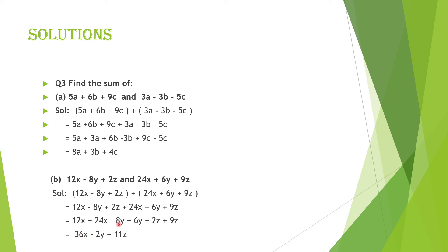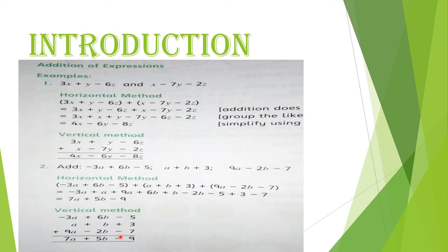Minus 8y aur plus 6y: 8 bada hai, 6 chota — 8 mein se 6 nikaalen: minus 2y. Phir 2z aur plus 9z: 9 plus 2 equal to 11z. Final answer: 36x minus 2y plus 11z.